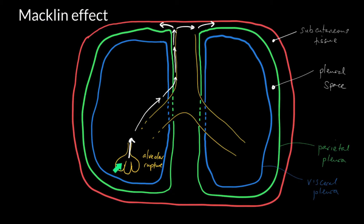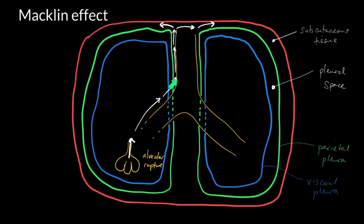You get alveolar rupture and gas tracks into the perivascular and peribronchial sheath, into the space between the parietal pleura and the trachea, and up into the soft tissues represented by the subcutaneous tissue. The parietal pleura is denoted by the green line and the visceral pleura by the blue line. Gas may track into the pleural space if there is a breach of the visceral pleura, but usually it goes into the space between the parietal pleura and the mediastinal contents, in this case the trachea. This is where surgical emphysema occurs as gas gathers in the subcutaneous fat.